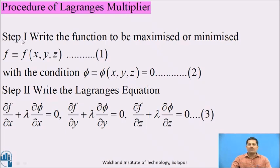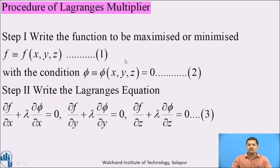In step number 1, we will denote the given function by f. Here we have considered f as a function of 3 independent variables — call it equation number 1. We will denote the restriction or the subjected condition by the notation phi. Here also we have considered it as a function of x, y, z, and we write it in the form phi(x, y, z) = 0 — call it equation number 2.